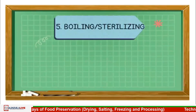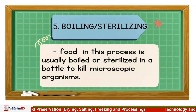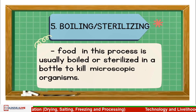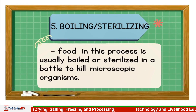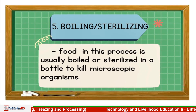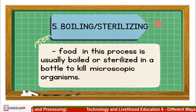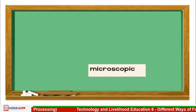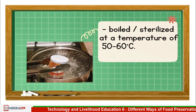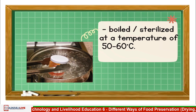Boiling or sterilizing — food in this process is usually boiled or sterilized in a bottle to kill microscopic organisms. Food is sterilized at a temperature of 50 to 60 degrees Celsius.